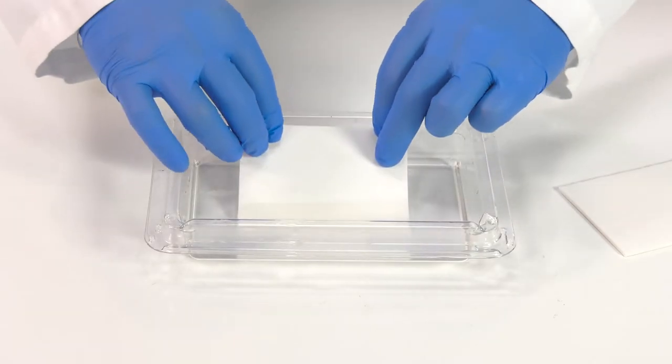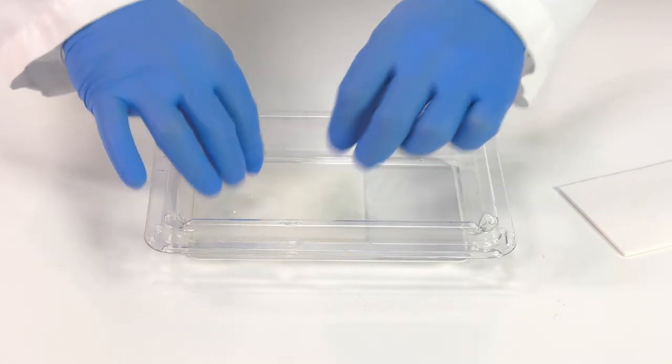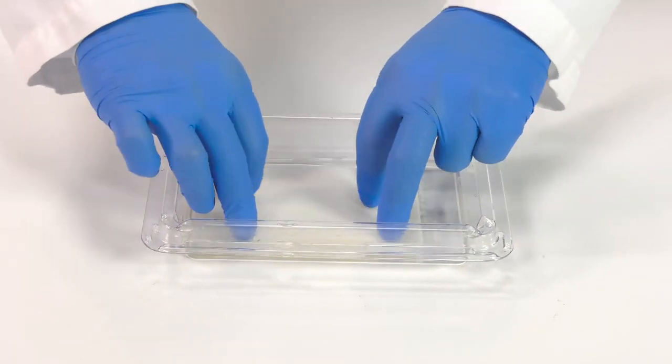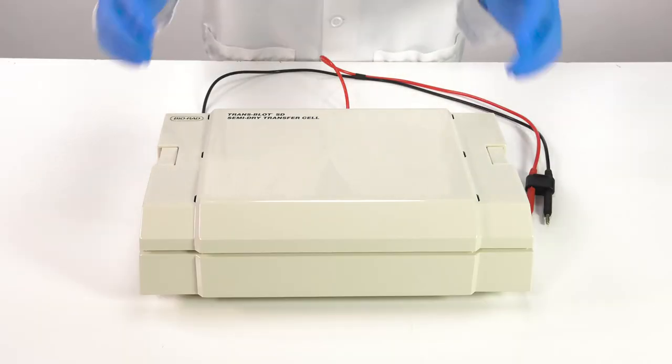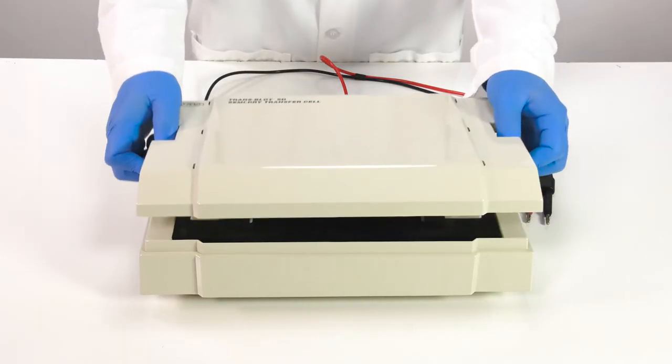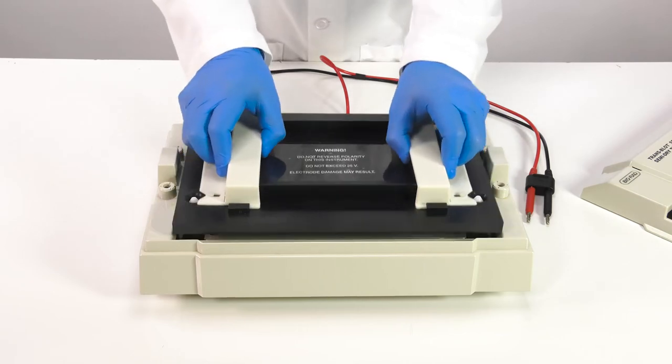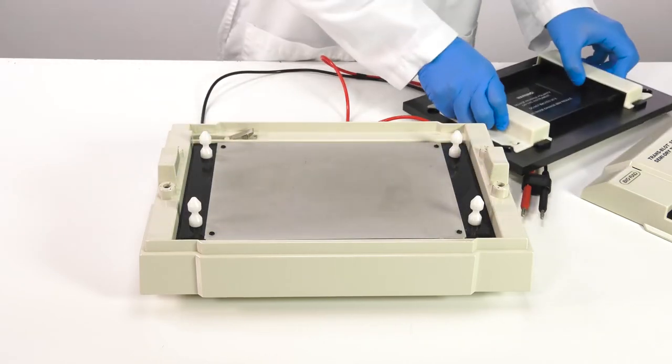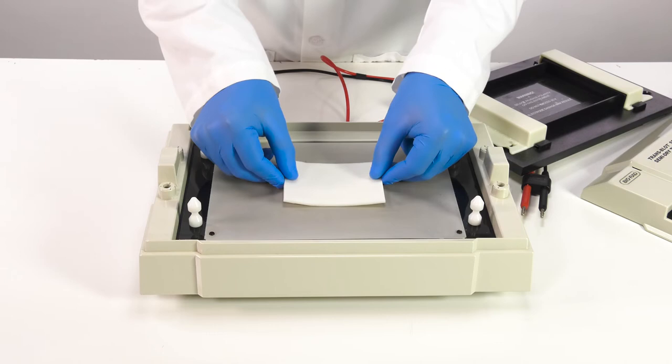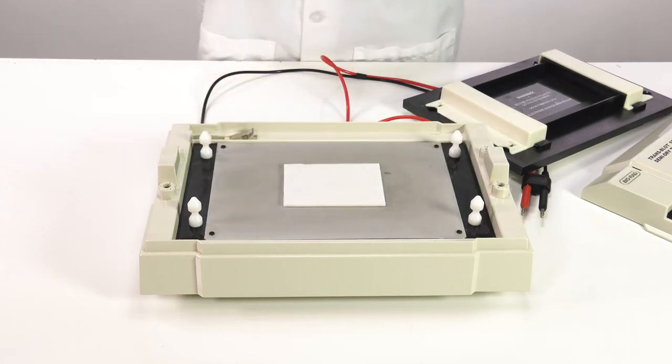Completely saturate two pieces of extra thick filter paper in transfer buffer. Remove the safety cover and cathode assembly from the instrument. Place a pre-soaked piece of filter paper onto the platinum anode.